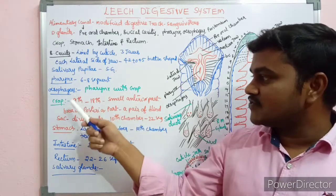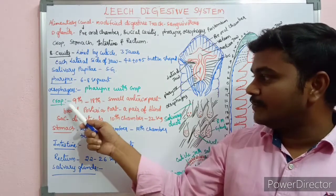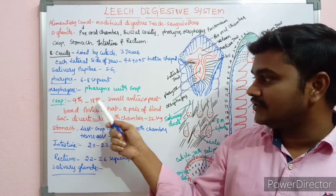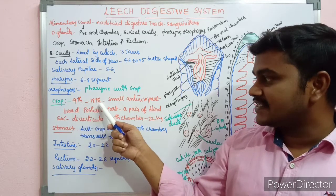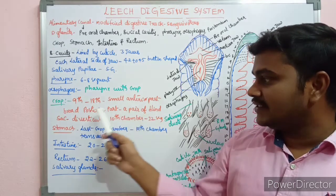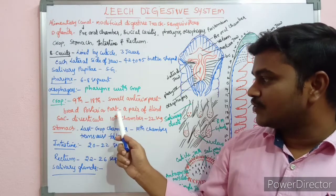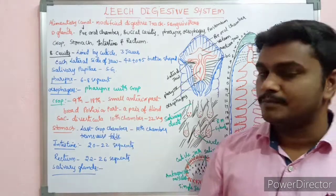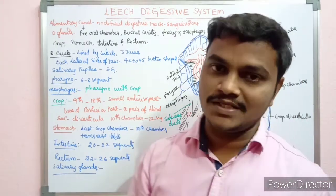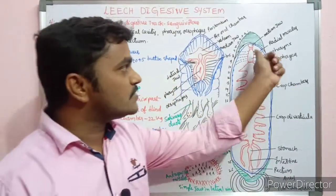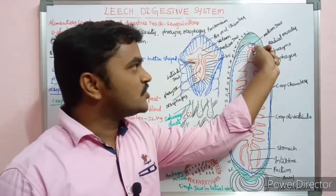The esophagus opens into the crop. The crop is located in the 9th to 18th segment. A small anterior part and broad posterior part is present in the crop. It is the main crop.